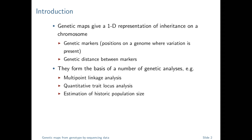The idea is that we're wanting to find genetic maps. A genetic map gives us a one-dimensional representation of inheritance in a chromosome. Across the chromosome we have a number of markers — positions on the genome — and we're trying to estimate the distance between those markers. This isn't a physical distance; we're estimating a genetic distance. Genetic maps are the first thing someone will do in a genetic workflow and form the foundation for a number of downstream analyses.